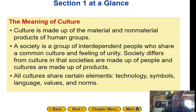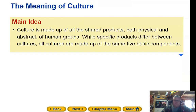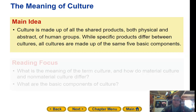All cultures share certain elements: technology, symbols, language, values, and norms. In this first section, we're going to talk about the meaning of culture. Culture is made up of all shared products, both physical and abstract, of human groups. While specific products differ between cultures, all cultures are made up of the same five basic components.